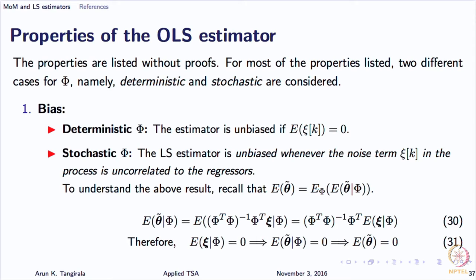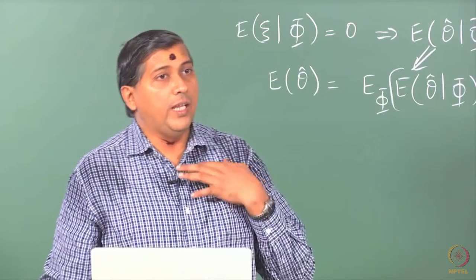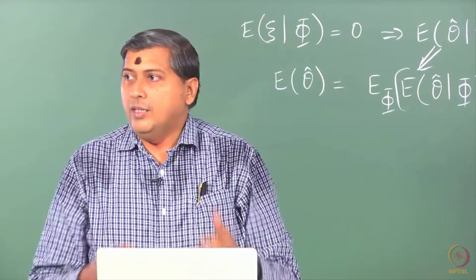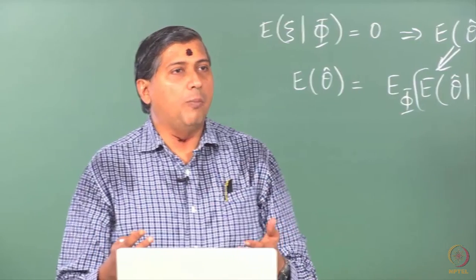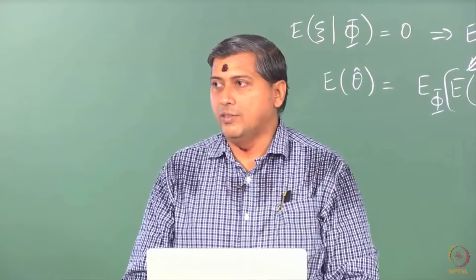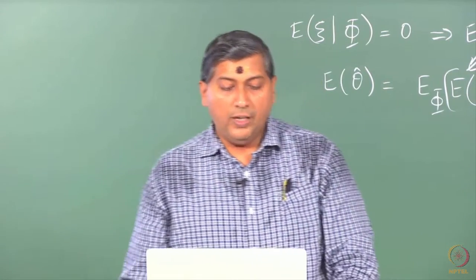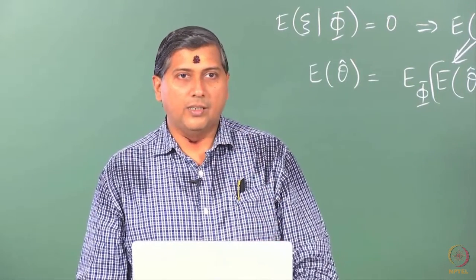Yesterday we discussed the case of fitting an AR-1 model to an AR-2 process. Bias can also arise, for example, if you are fitting an AR-2 model to an ARMA model. Although the autoregressive orders may match, the moving average component will render the regressors correlated with the residuals, and that example is also included in the markdown file I demonstrated yesterday.